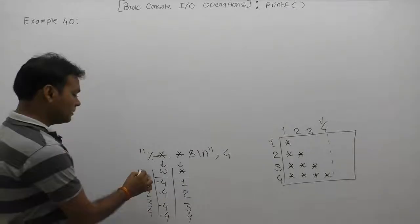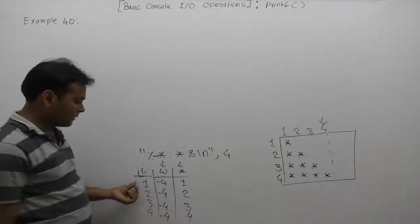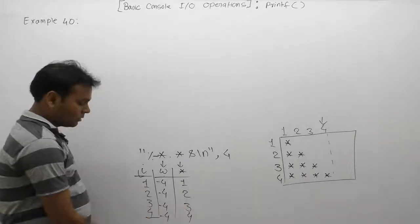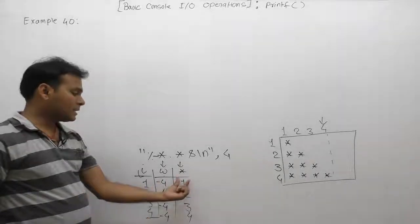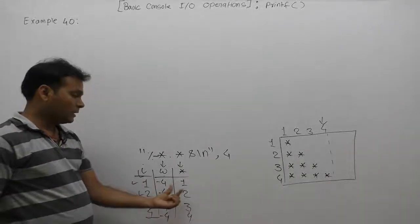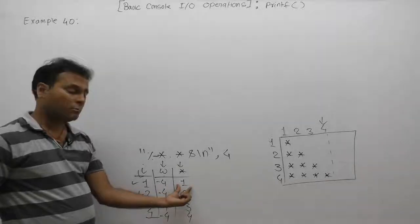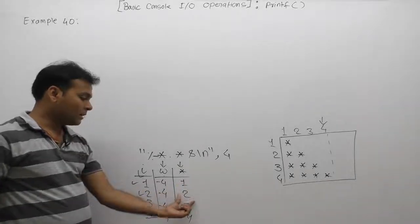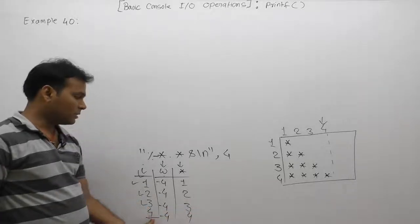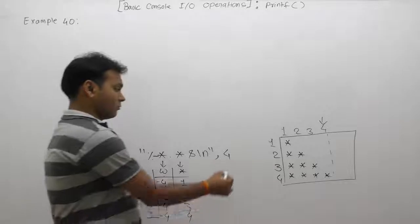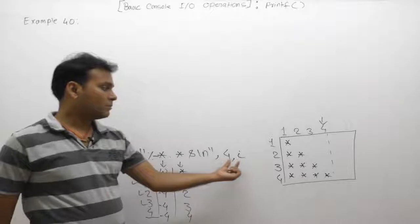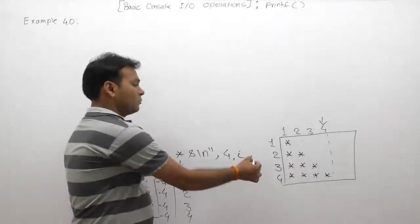The i value starts from one and increments every time, going up to four. The number of stars is equivalent to the value of i. When i is one, one star is required. When i is two, two stars are required. When i is three, three stars are required. When i is four, four stars are required. Therefore in place of the second star parameter we can write the value of i, giving four iterations of stars.